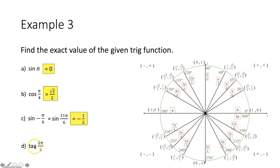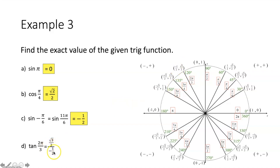For part d, evaluate tangent of 2π over 3. We locate 2π over 3 on the unit circle — equivalent to 120 degrees. Tangent of an angle equals the y-coordinate over the x-coordinate of the corresponding point. Since our point is (negative 1 half, √3 over 2), tangent of 2π over 3 equals √3 over 2 divided by negative 1 half. Dividing by a fraction is the same as multiplying by its reciprocal. The 2s cancel, and we end up getting negative √3. That's what tangent of 2π over 3 equals.